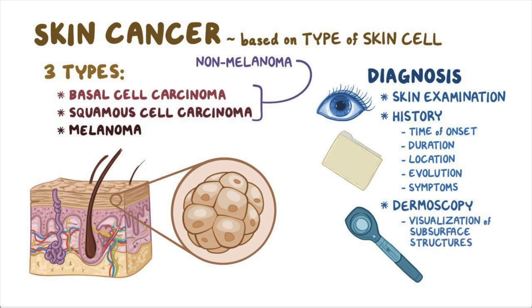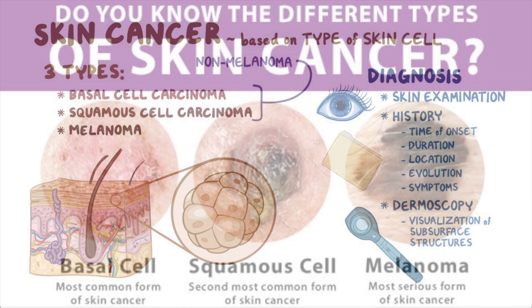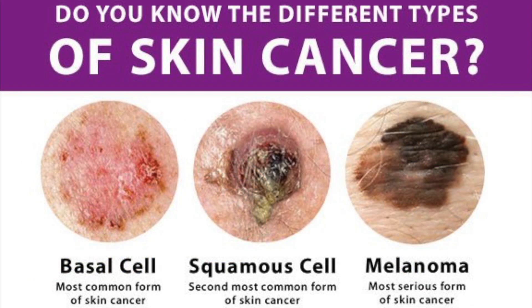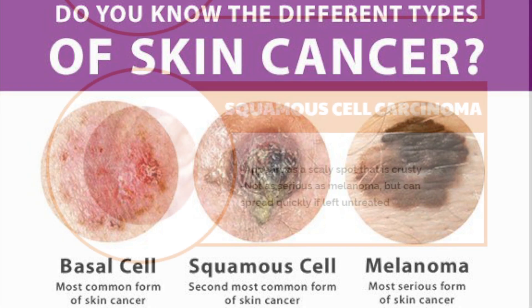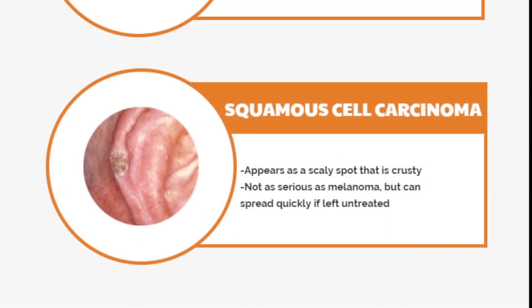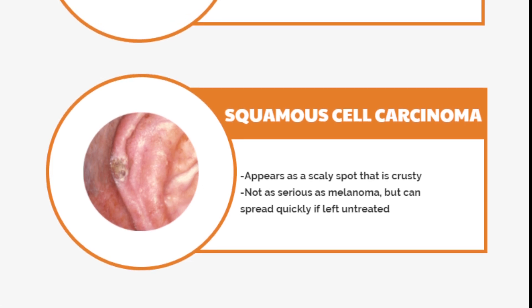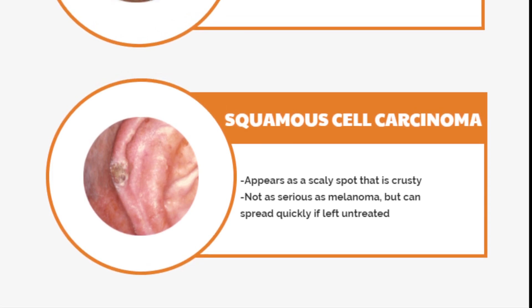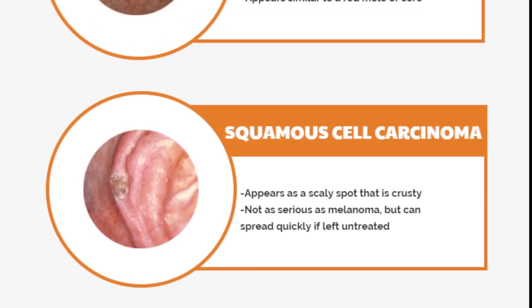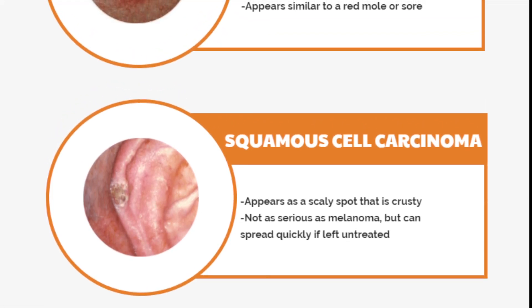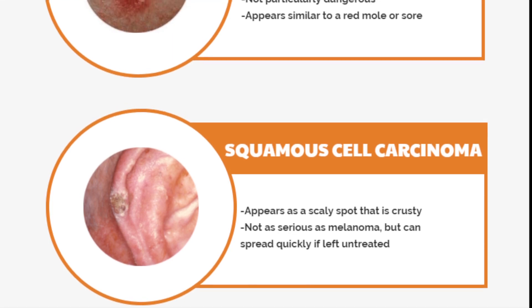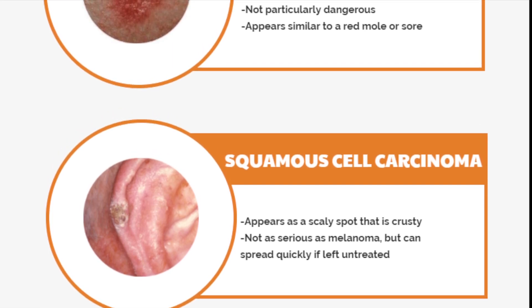The epidermis contains three main cell types. Squamous cells are flat cells in the outer part of the epidermis. They constantly shed as new cells form. The skin cancer that can form in these cells is called squamous cell carcinoma.